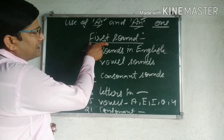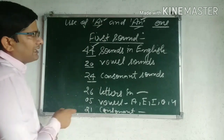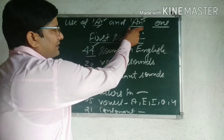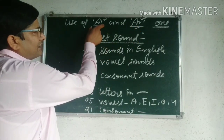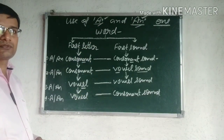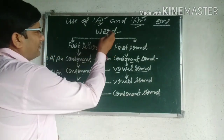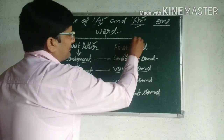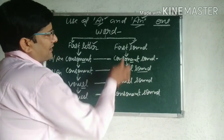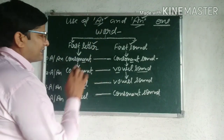First sound of the word will decide कि वहाँ हमें An use करना है या A use करना है. If the first sound of the word is a vowel, तो वहाँ An use करना है. First sound of the word is consonant, तो वहाँ A use करना है. आइए इस structure से A और An के proper use को समझने का प्रयास करते हैं.